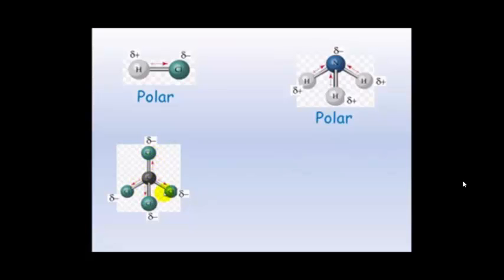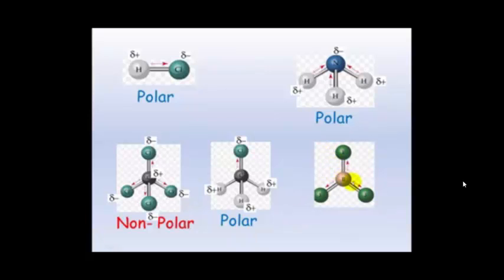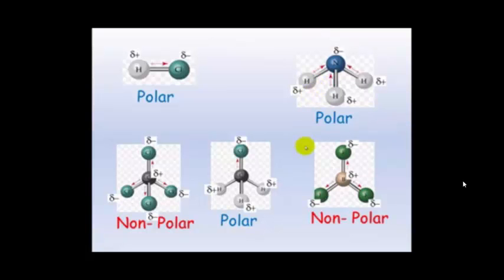Carbon tetrachloride has delta negatives on the chlorine atoms due to their higher electronegativity and a delta positive on the carbon. There are polar bonds present; however, it is a symmetrical molecule with no definite single positive or negative side, so it is a non-polar molecule. Another example shows a definite negative and positive side, making it polar. A planar pyramid shape may appear to have polar bonds but because it is flat with negatives surrounding a positive middle and no distinct positive and negative sides, it is non-polar. Shape is really important in determining whether a molecule is polar or non-polar.